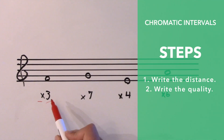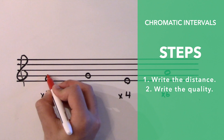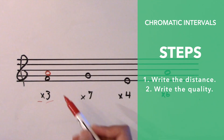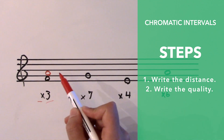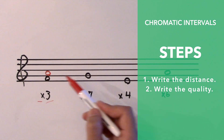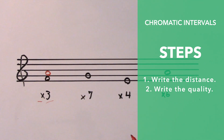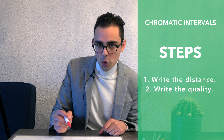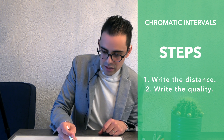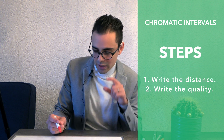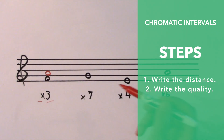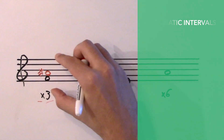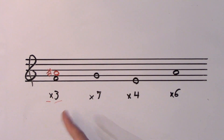Let's start with this one. Step one is to write the distance — a third above F is A. Step two is to figure out the quality. F to A is a major third because A is the third note of an F major scale. To make it augmented, I need to increase the space. I can't change the given note, so I alter the note I wrote. By adding a sharp, those notes got farther apart — this is an augmented third.